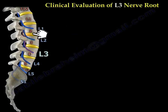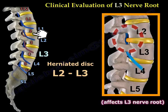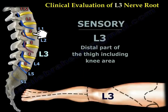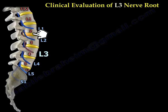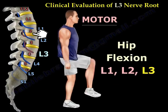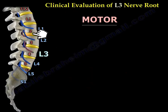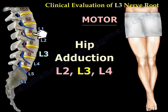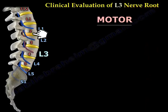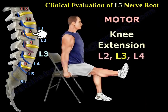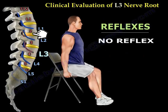A disc herniation between L2 and L3 will affect the L3 nerve root. The sensation of L3 will be the distal part of the thigh, including the knee area, as illustrated in this diagram. The motor: hip flexion — L1, L2, and L3; hip adduction — L2, L3, and L4; and knee extension — L2, L3, and L4. There is no reflex for L3.